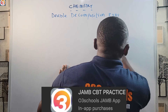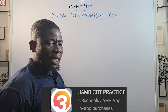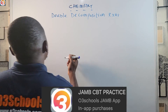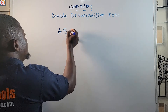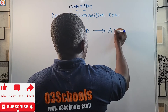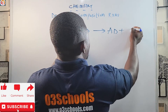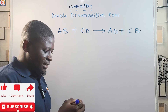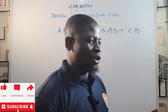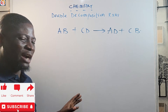A double decomposition reaction is a reaction of this sort: AB + CD gives you AD + CB. This is how a double decomposition reaction looks and how it plays out.